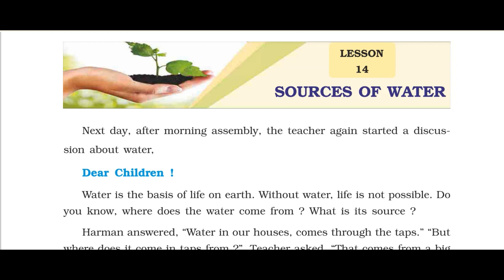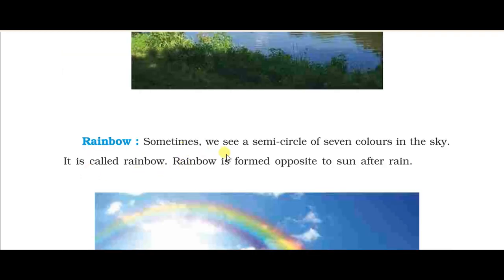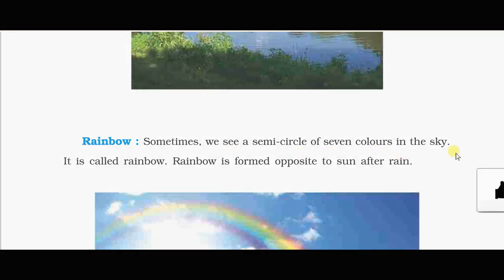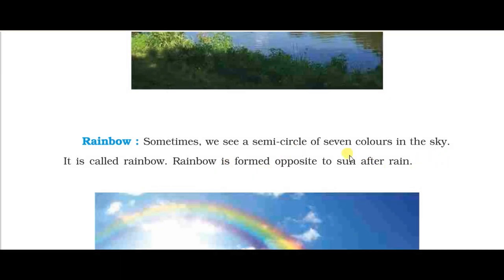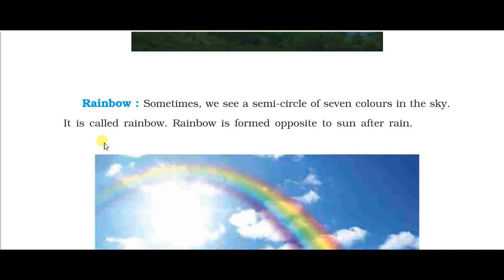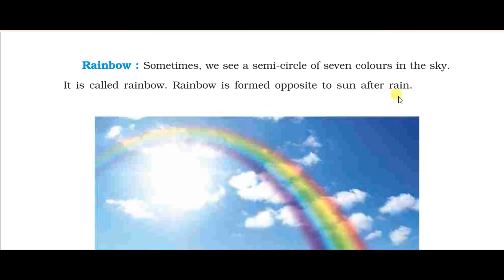Today we will discuss the rest part of this lesson. Let's start. Rainbow — sometimes we see a semicircle of seven colors in the sky; it is called a rainbow. Kabhi kabhi aasman mein saat rangon ka ek semicircle dekhte hain, jo indradhanush kehlata hai. Rainbow is formed opposite to the sun after rain.